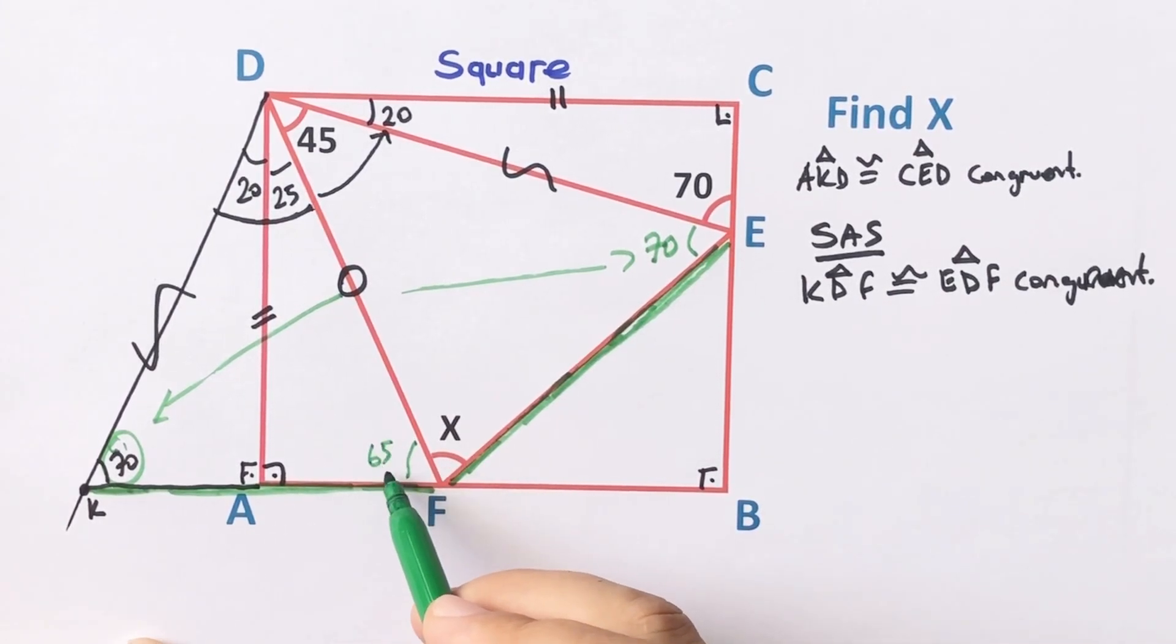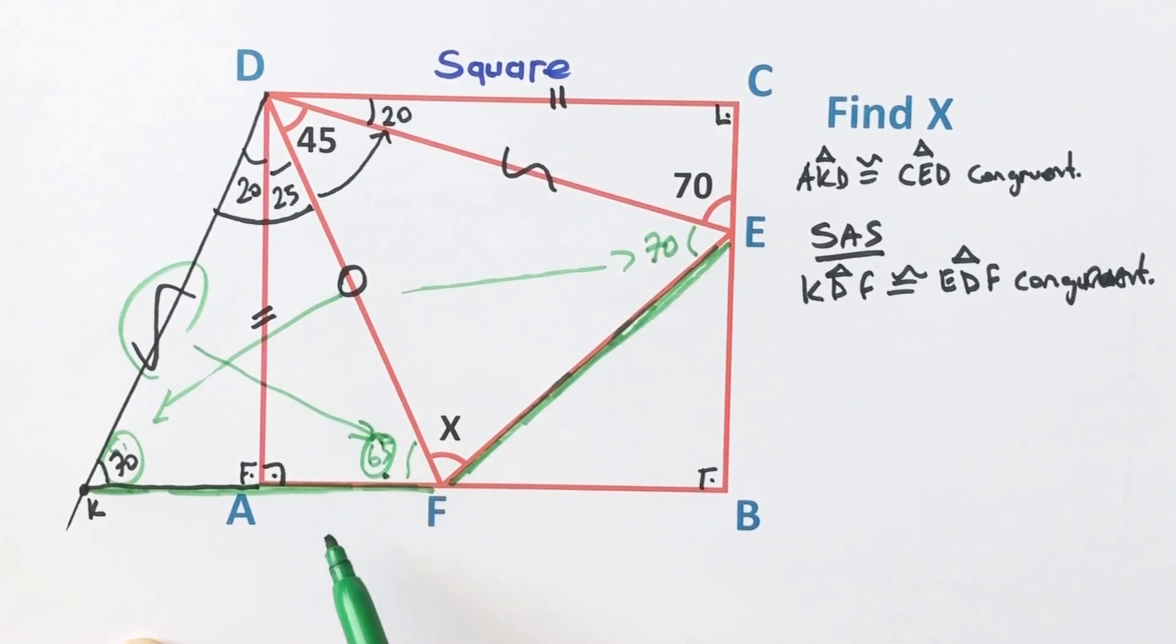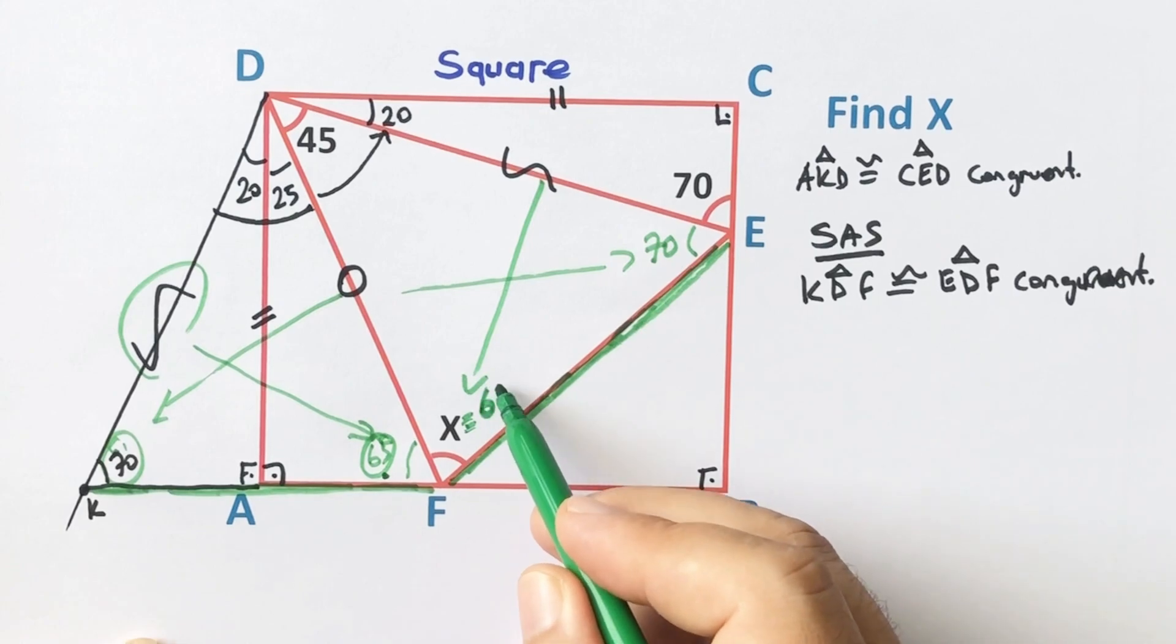And here is 65 degrees. Therefore if there is a 65 degrees, opposite of the same length must be 65 degrees. So x equals 65 degrees.